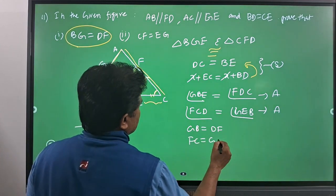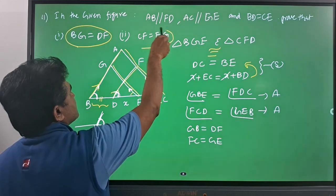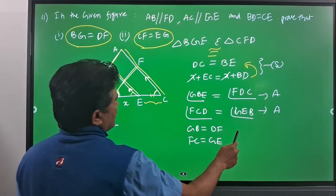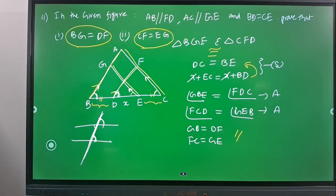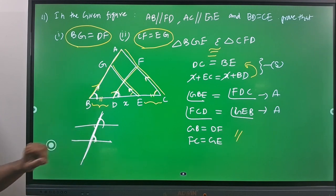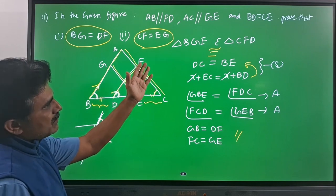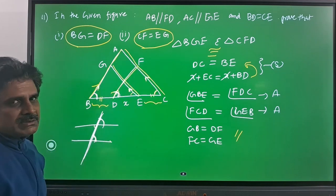So CF is equal to ZE, which is what we need to prove as the second condition. From the given congruency, we can prove both required relations. The major part is the parallel lines and transversal lines, and the equal angles they produce. Based on this, we can prove the congruency, and from that congruency we can prove the given relations.